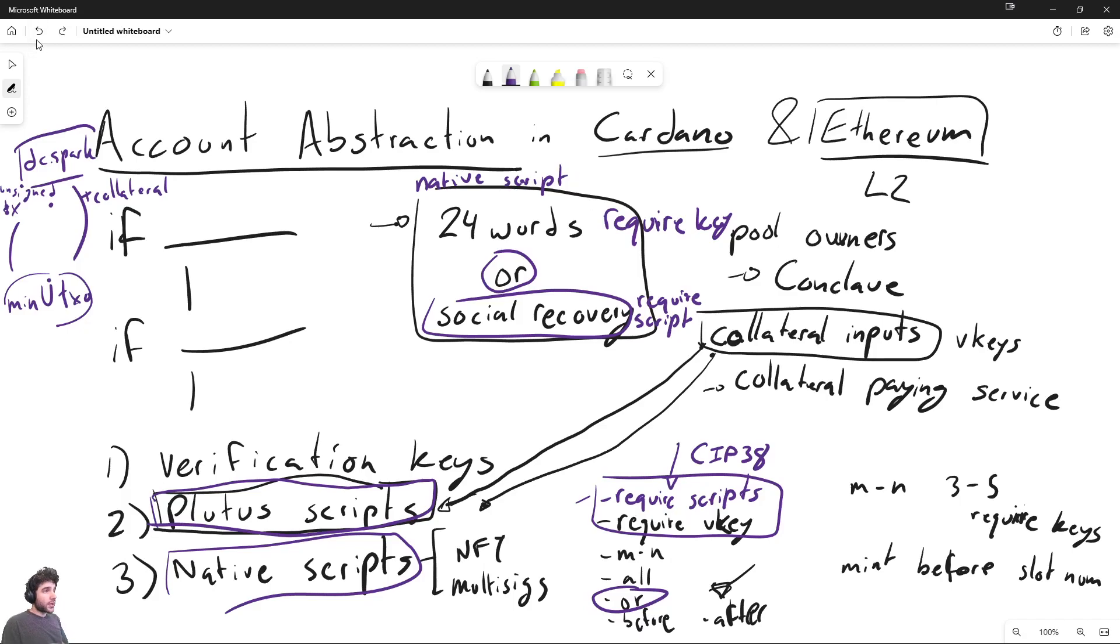And then so this entire account abstraction wallet would be one native script. And so this is the other way that native scripts could be brought to Cardano is through SIP 38, which adds a lot of the function that required. So as long as we have SIP 38 plus a collateral payment service, then we have the two key building blocks to bring account abstraction to Cardano. And both of these are in the works by DC Spark. So we're hopefully going to be working on both of them.